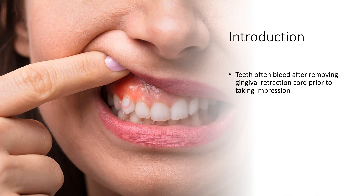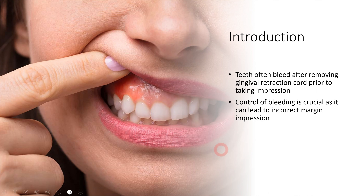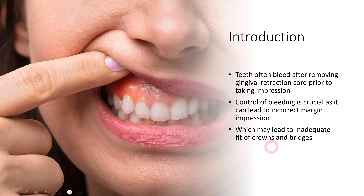If we do not control the bleeding, it leads to incorrect margins in the impression, which results in incorrect margins of our prosthesis — including crowns and bridges. So let's talk about the different causes and how we actually manage this bleeding during dental impressions.